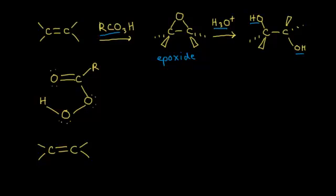Let's look at the mechanism to form our epoxide. We start with our percarboxylic acid, which looks a lot like a carboxylic acid except it has an extra oxygen. The bond between these two oxygen atoms is weak, so this bond is going to break in the mechanism. The hydrogen ends up being very close to this oxygen because of intramolecular hydrogen bonding that keeps it in this conformation. When the percarboxylic acid approaches the alkene and gets close enough in this conformation, the mechanism will begin.